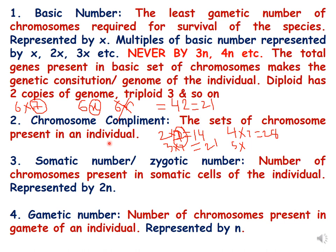The second term is chromosome complement — the sets of chromosomes present in an individual. A diploid has two sets of chromosomes, a triploid has three sets, and a tetraploid has four sets, and so on. The somatic number or zygotic number is the number of chromosomes present in somatic cells of an individual, represented by 2n. You can see that somatic number is represented by 2n, while monoploids are represented by 2x.